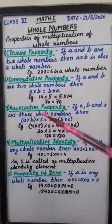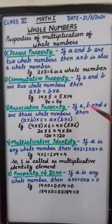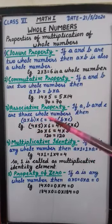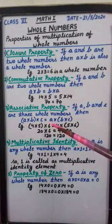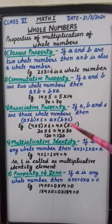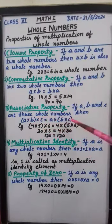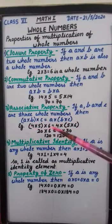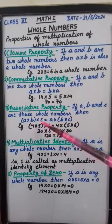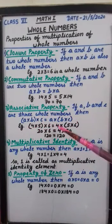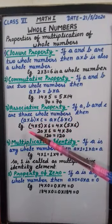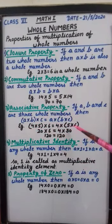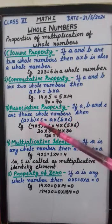Third is associative property. If A, B and C are three whole numbers then (A × B) × C is equal to A × (B × C). That means we are changing the place of the bracket. For example, (four multiply by five) multiply by six is equal to four multiply by (five multiply by six). Here the bracket is on the first two numbers on one side and on the last two numbers on the other side.